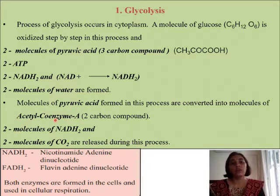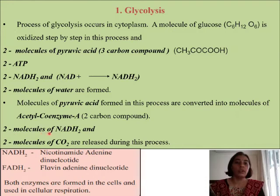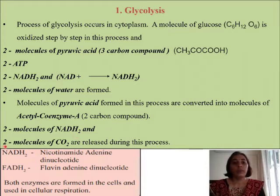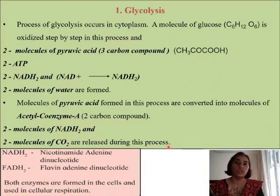Acetyl coenzyme A is a two-carbon compound. Along with this, we are getting two more molecules of NADH2 — that is, again NAD+ is getting converted to NADH2 by gaining electrons and hydrogen. Along with this, we are getting two molecules of carbon dioxide, which is a waste product released during this process.